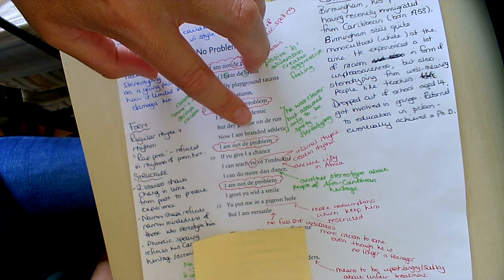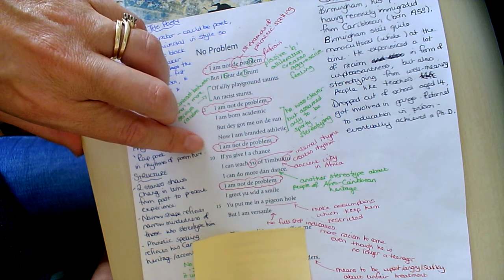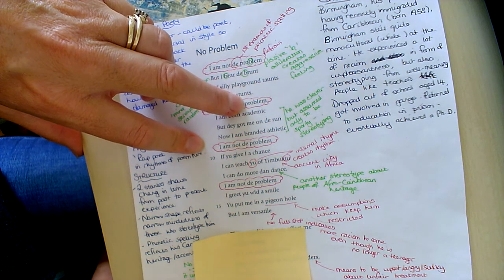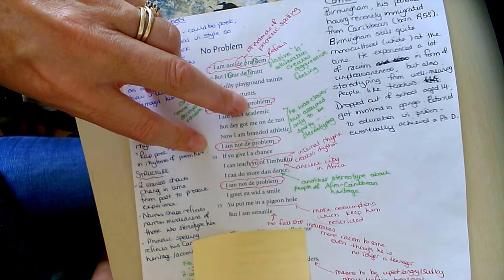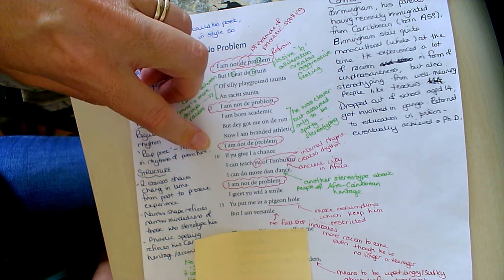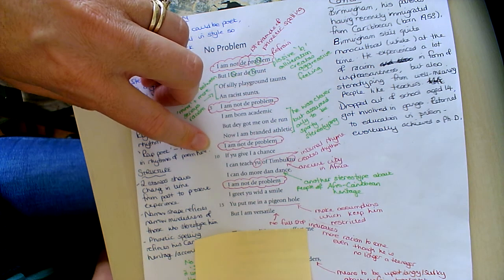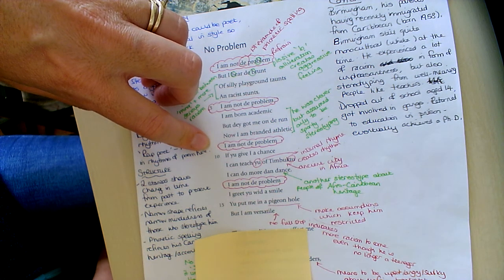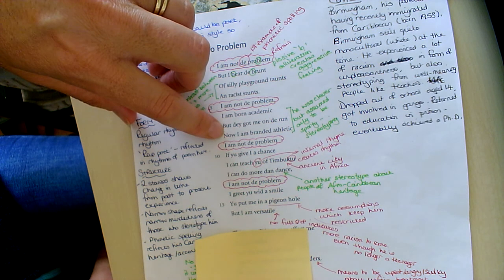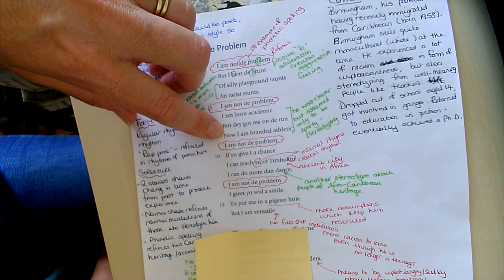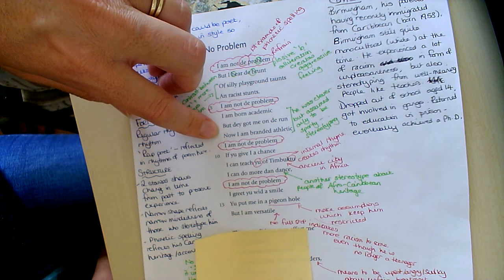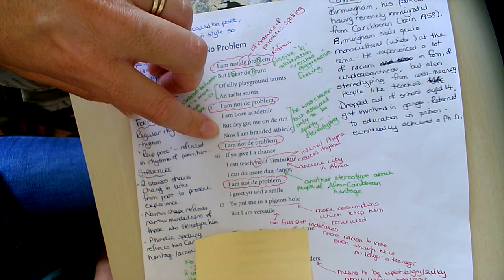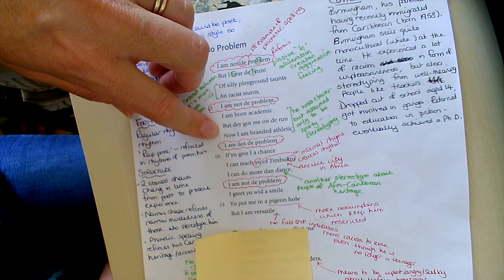He says I am born academic but they got me on the run, now I am branded athletic. So he says I'm quite clever actually, I'm a bright chap, but they, presumably being white people, possibly teachers, assumed that I would be a sporting.